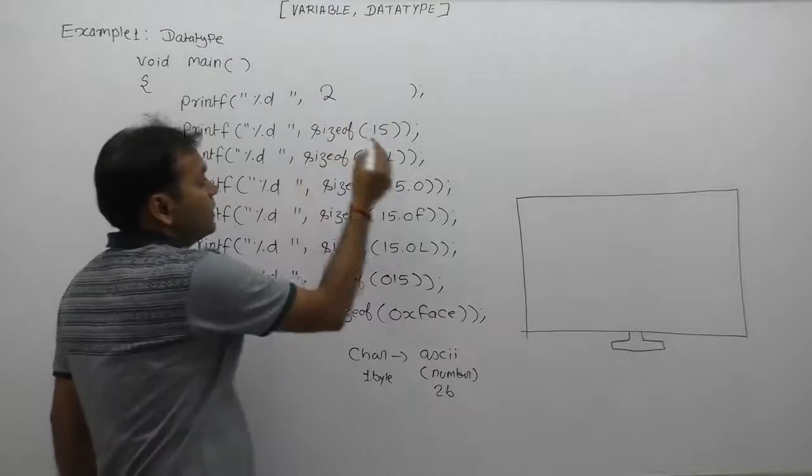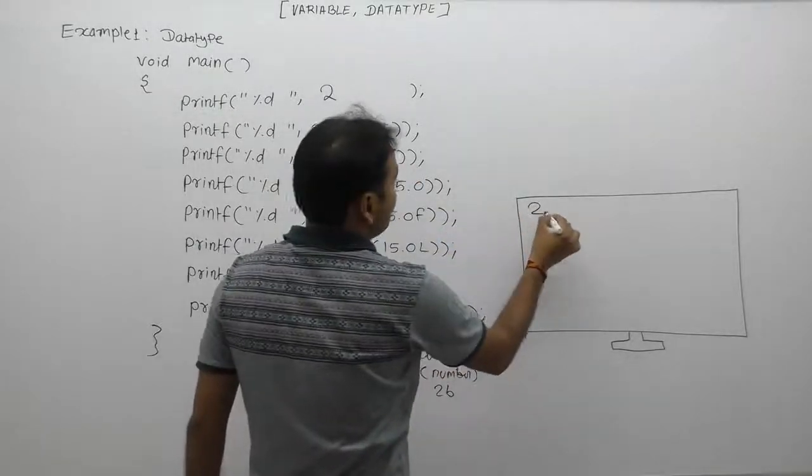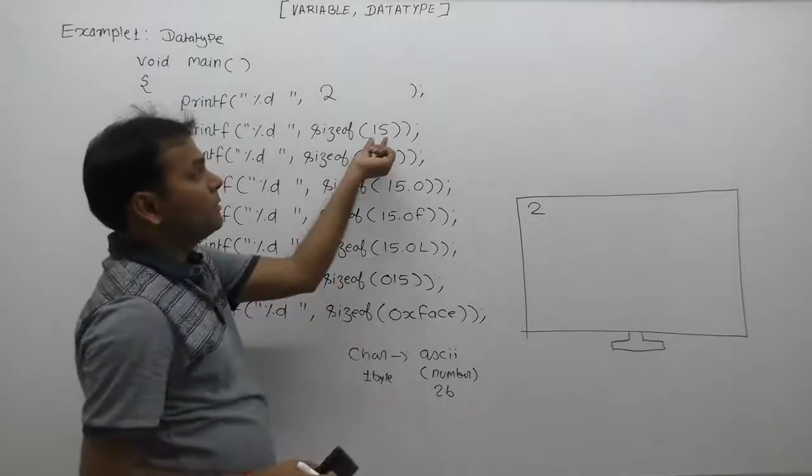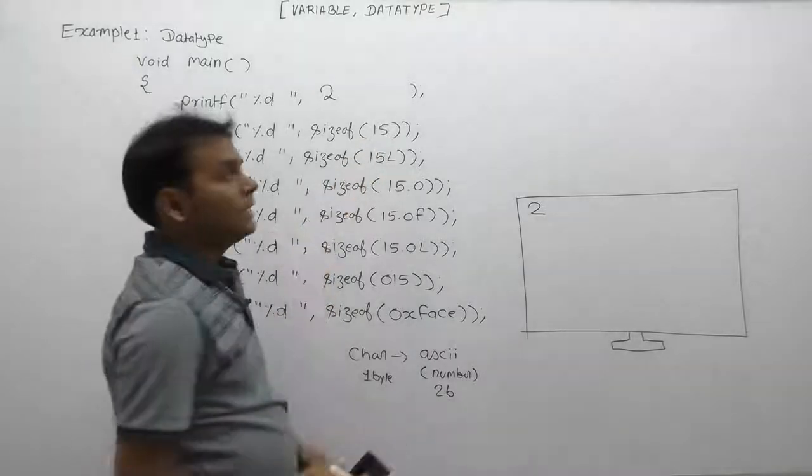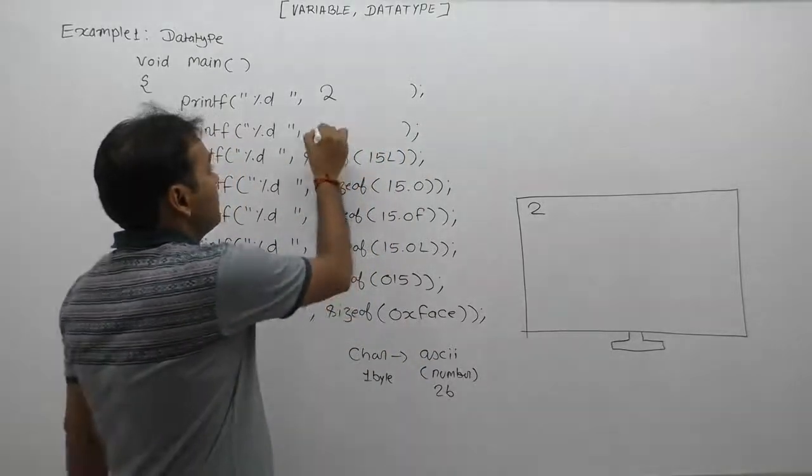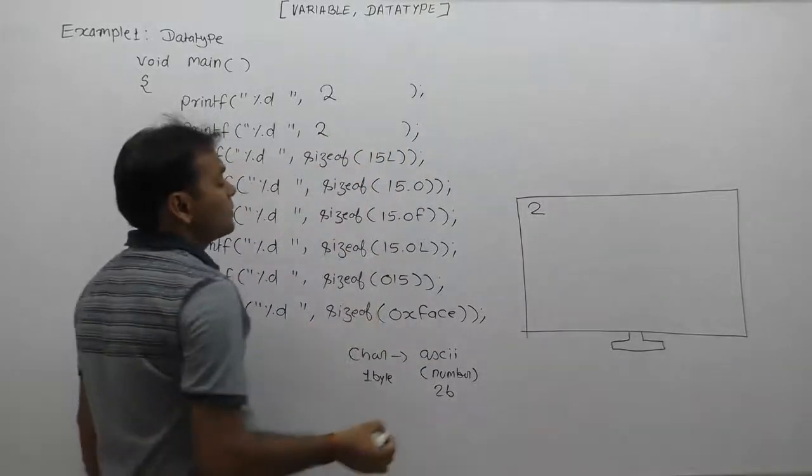And the final printed value by this printf function is 2. Next, in the second case, we are supplying directly 15. 15 is an integer literal and integer will take again 2 bytes, therefore the sizeof operator will return 2 and finally the printed value is 2.